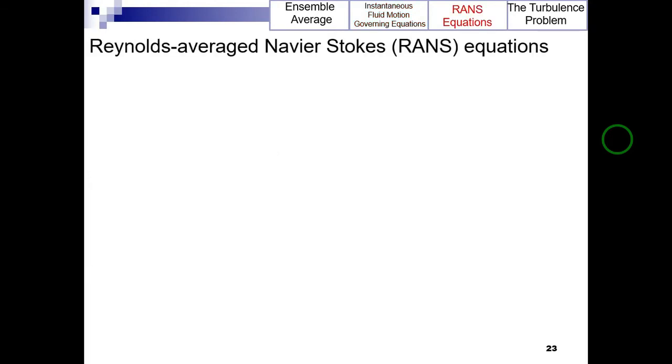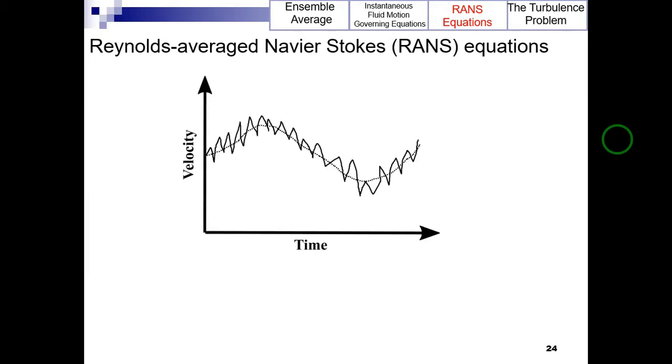Now let's talk about the Reynolds-averaged Navier-Stokes equations. Osborne Reynolds suggested that the variables in the Navier-Stokes equations could be decomposed into ensemble mean and fluctuating components. This can be justified using the following figure which shows the velocity value measured at a single point in a non-stationary turbulent flow. Thus the instantaneous velocity and pressure can be written as these equations, where u prime and p prime are fluctuating components while u and p are ensemble mean components.